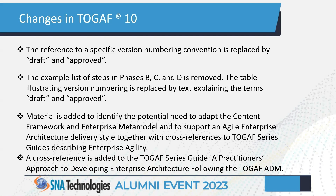Material has been added to identify the potential need to adopt the content framework. Earlier there were core and extensions, but those have been removed — every metamodel entity is now core. Some adoption guidance is also suggested to support the agile enterprise architecture delivery style. A cross-reference has been added to the series guide on a practitioner's approach to developing enterprise architecture following the idiom for agile architecture.